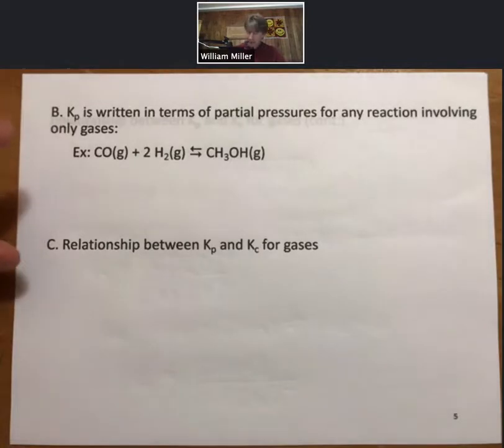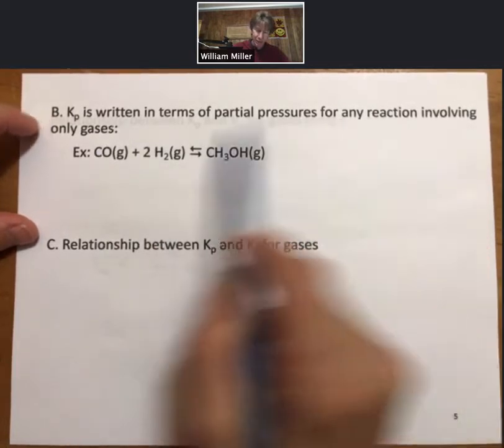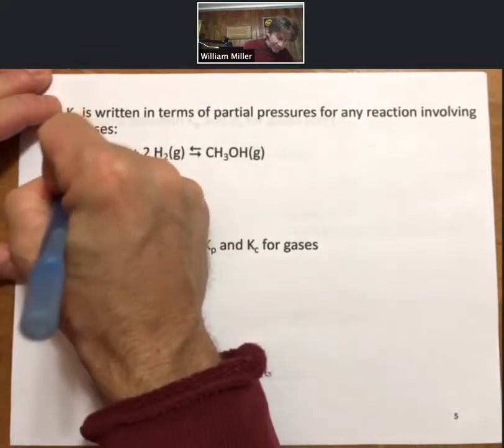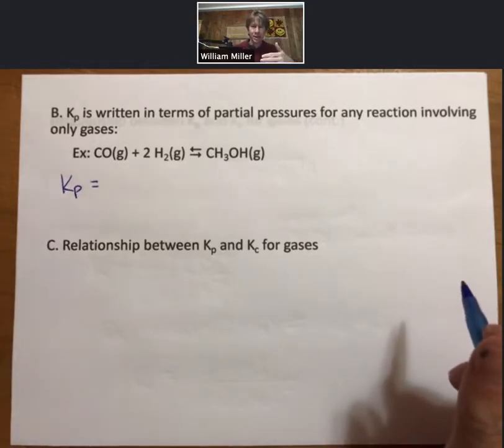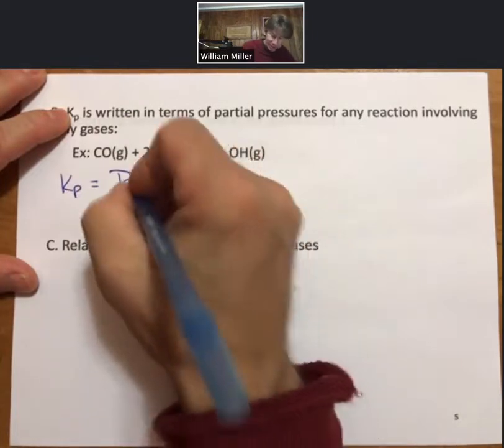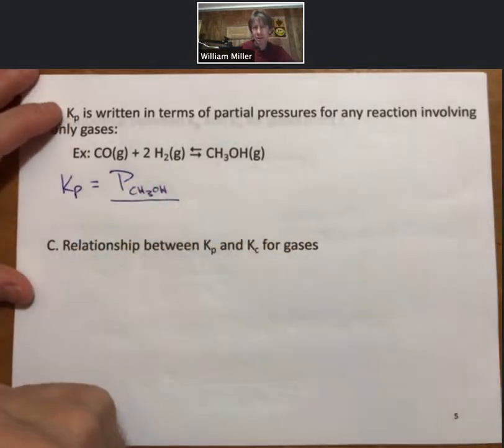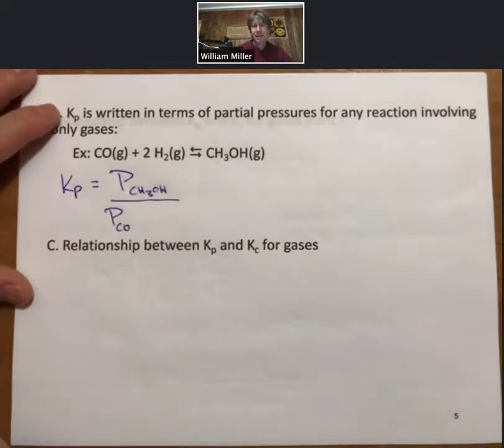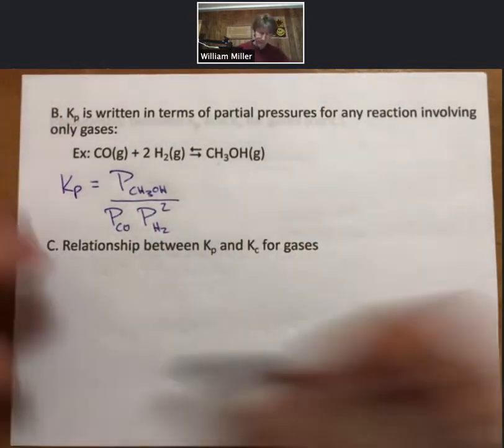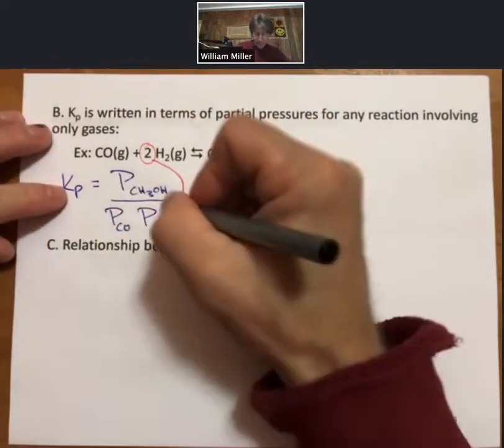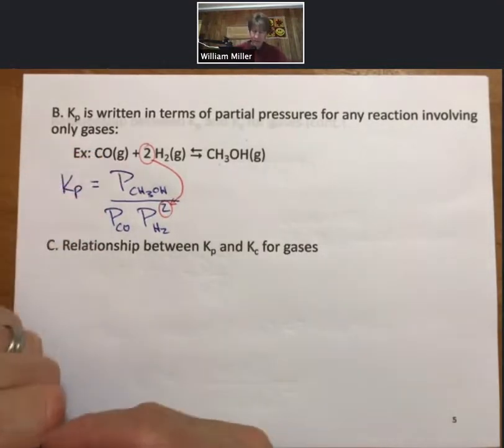Now let's talk about Kp. Kp is the equilibrium constant written in terms of partial pressures for any reaction involving only gases. So Kp will follow the same set of rules as far as products on the top. So it will be partial pressure of our product raised to the first power because coefficients are still exponents over partial pressure of carbon monoxide times partial pressure of hydrogen squared.